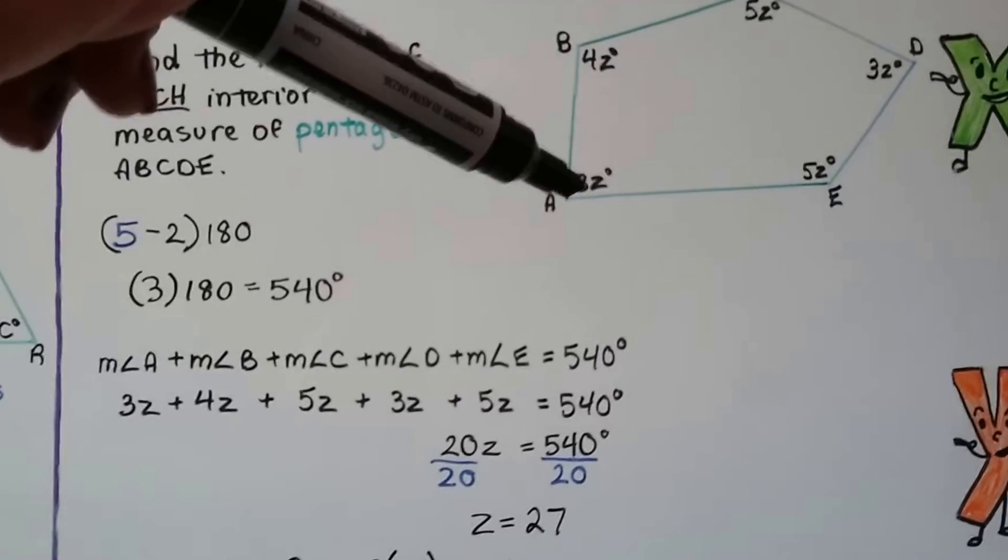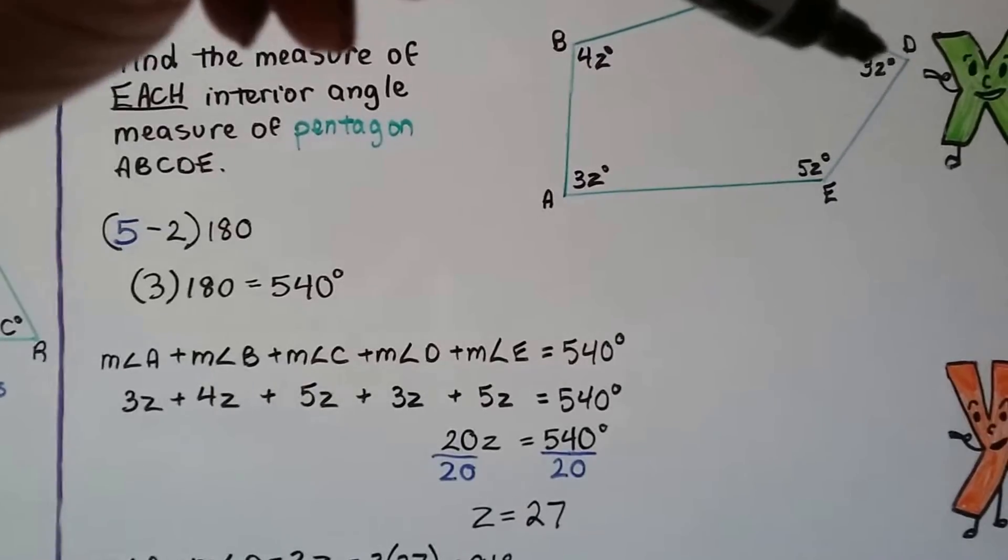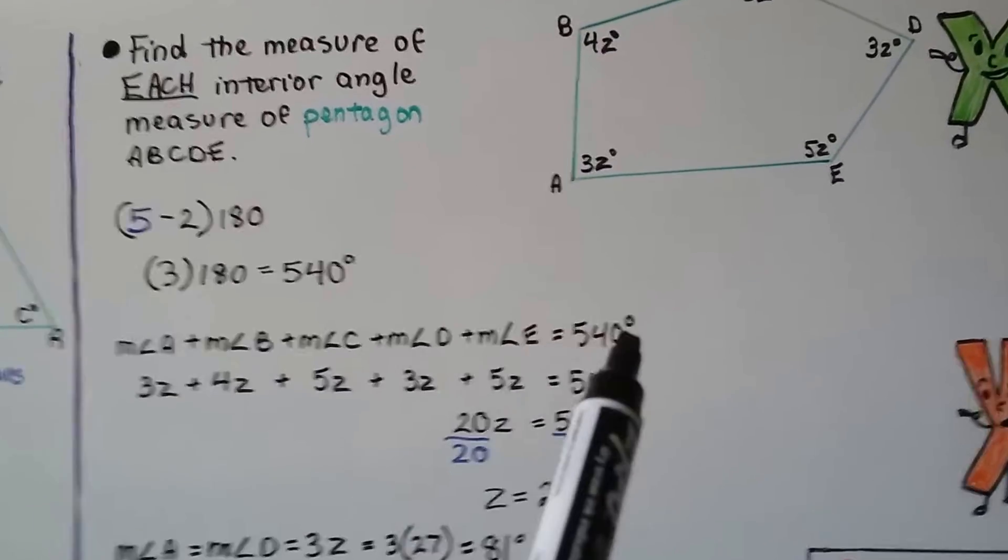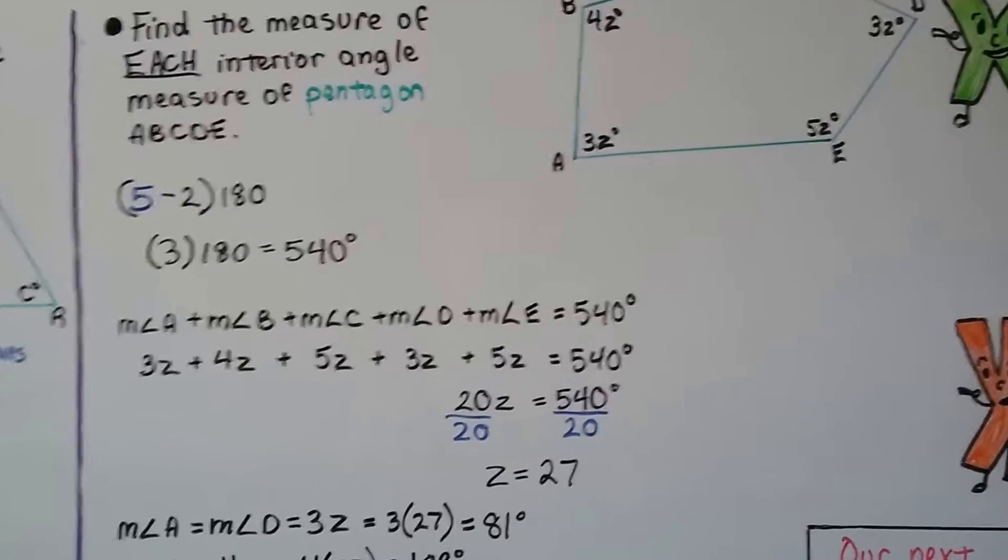We know that this is 3Z, that's 4Z, that's 5Z, that's 3Z, and that's 5Z. If we add up all the angle measures, it should total 540 degrees.